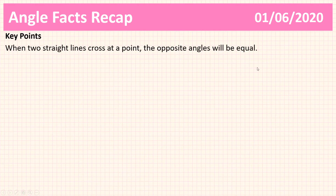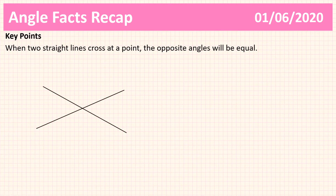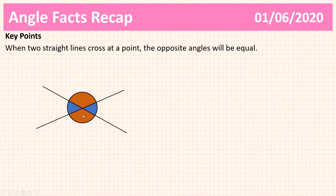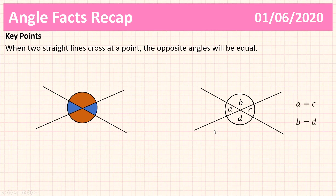Now let's do a reminder of our next angle point: when two straight lines cross at a point, the opposite angles are going to be equal. Here we have two straight lines that cross at a point. The two blue angles are opposite each other and they are equal; the two orange angles are opposite each other and they are equal. Using algebra, we can say that a is equal to c and b is equal to d. I'd like you to pause the video and, using the three angle rules we already know, tell me what else you can say about these angles.